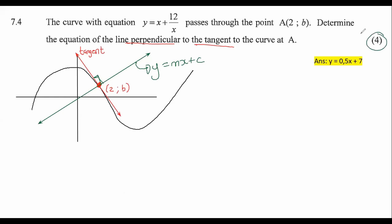Four marks. We've got quite a few things to do. Let's make some notes about what we should remember about tangents and perpendicular lines. Number one: the gradient of the tangent is the same as the gradient of the graph.